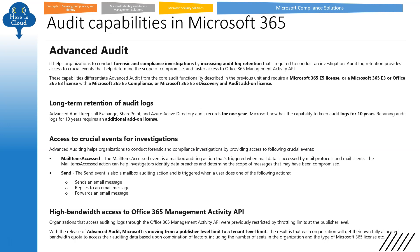The second point to remember about Advanced Audit: it gives access to crucial events for investigation — for example, when was mail accessed, when was it sent, when was the reply sent, when was it forwarded — up to that level of detail. Third point: high-bandwidth access to the Office 365 Management Activity API. When dealing with Advanced Audit data, you get a dedicated bandwidth to connect to the Microsoft Office 365 Management Activity API, allowing you to access large amounts of data at high speed.